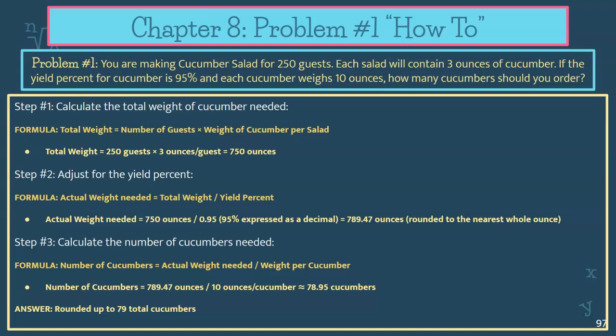First, you're going to calculate the total weight of the cucumbers you actually need for the salads. You have 250 guests and you're going to multiply that by three ounces, because each guest is going to have three ounces of cucumber. When you do that calculation, you need 750 total ounces of cucumber. That is going to be your edible portion quantity, because that's what you're going to serve in the salads.